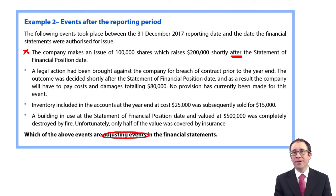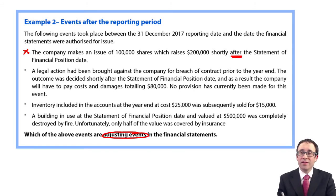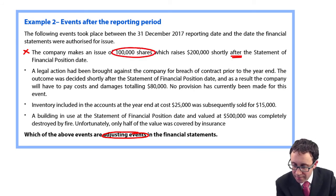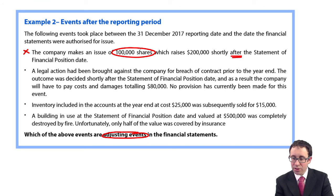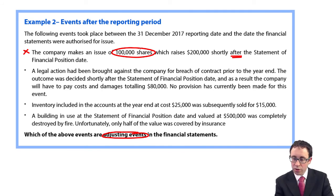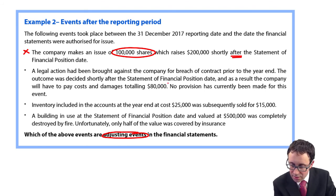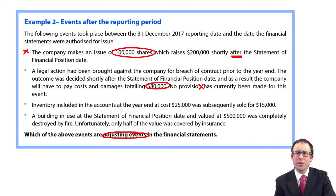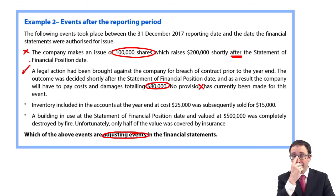Just note — and it's a small point — that in EPS, the figure calculated in a later chapter would take account of those additional shares. Number two: legal action brought against the company for breach of contract, where the outcome was decided just after the statement of financial position date, and the company will have to pay damages of $80,000. No provision has currently been made — clearly they thought it was only possible, but now it's probable. So therefore, we will provide for that $80,000.